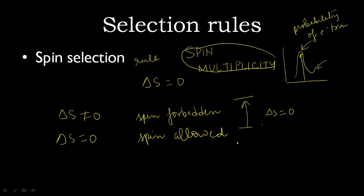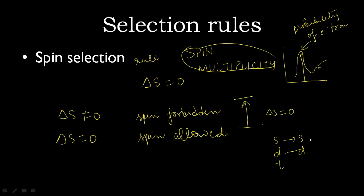So the transition of singlet to singlet is allowed, doublet to doublet is allowed, and triplet to triplet is allowed.